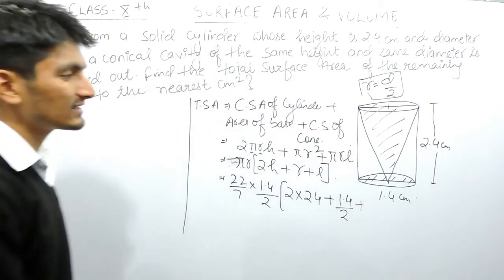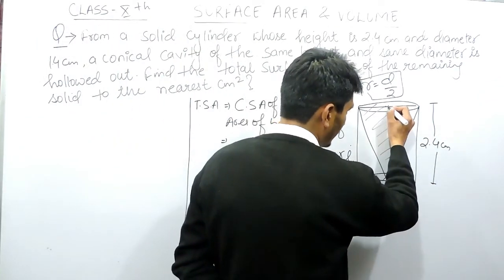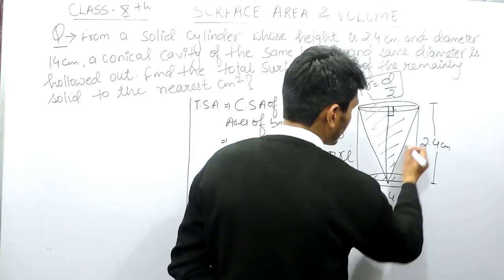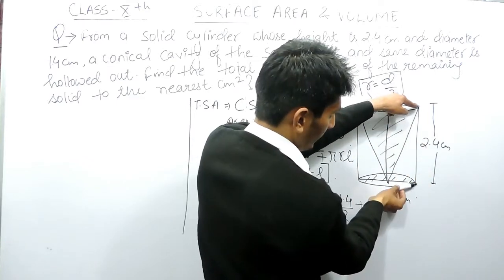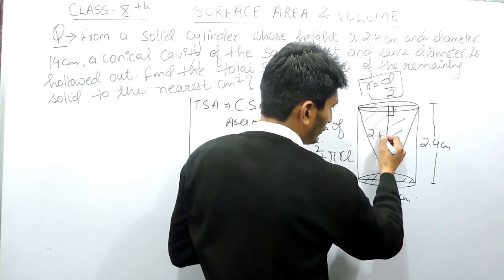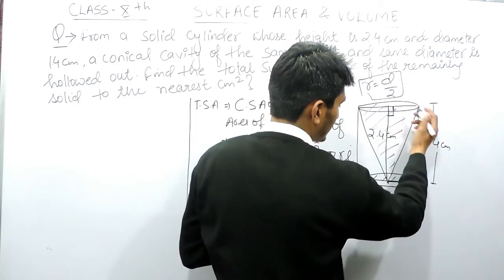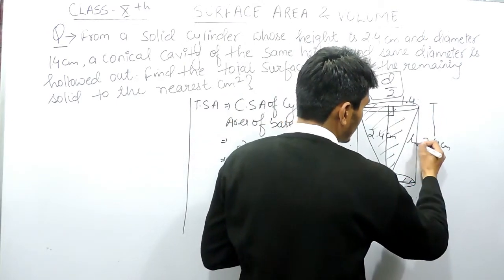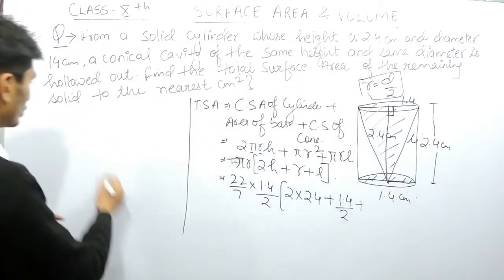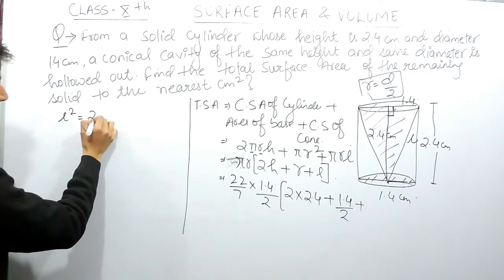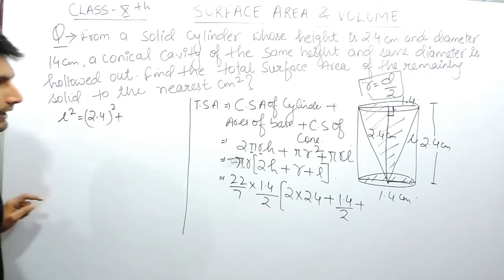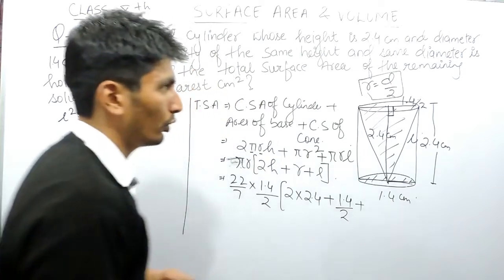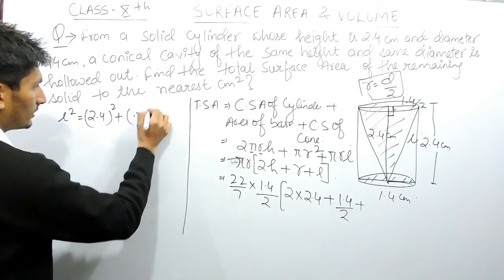To find the slant height, since this is a right circular cone, we use a right-angle triangle where the height is 2.4 cm and the radius is 0.7 cm. Using the Pythagoras theorem: l² = h² + r², which gives l² = (2.4)² + (0.7)², that is l² = 5.76 + 0.49.